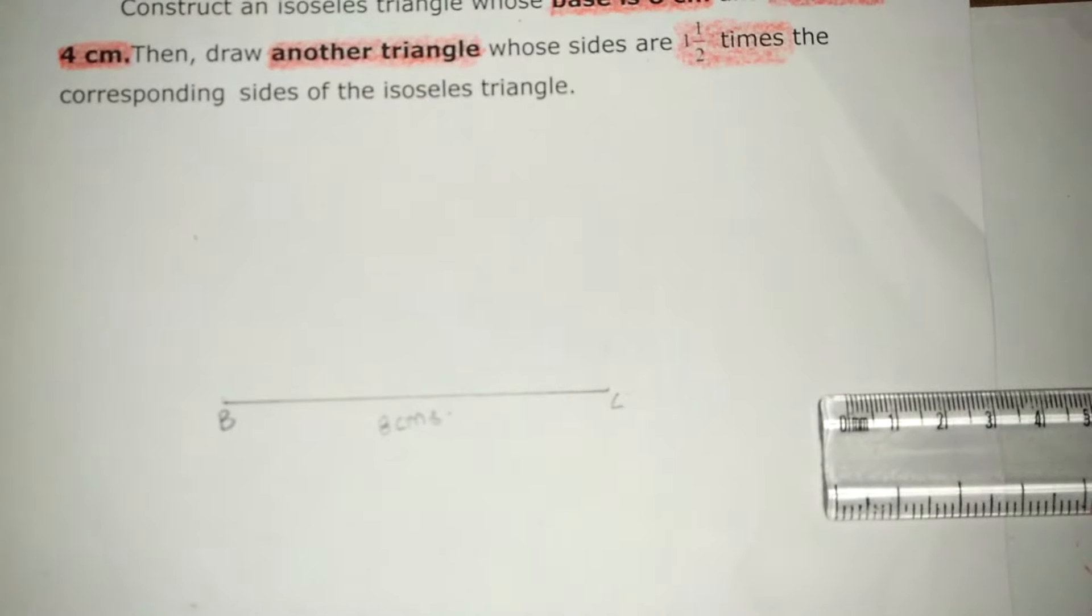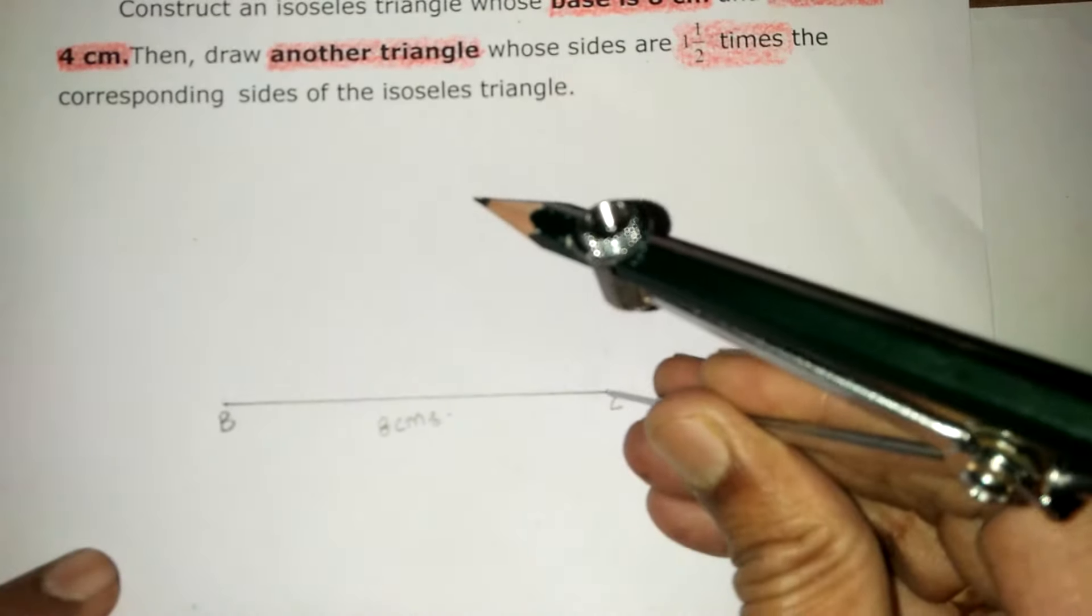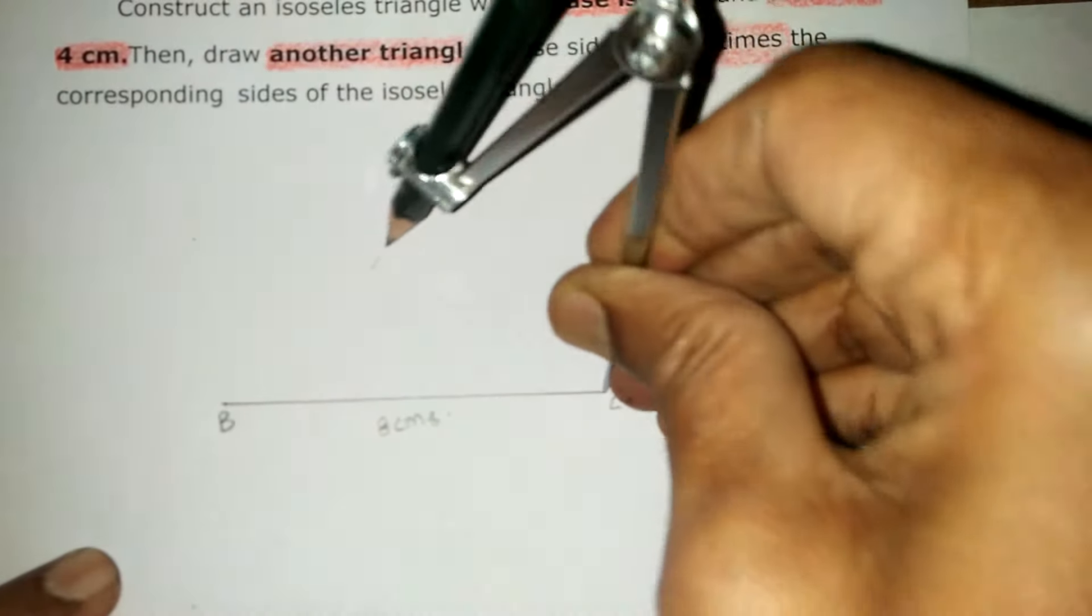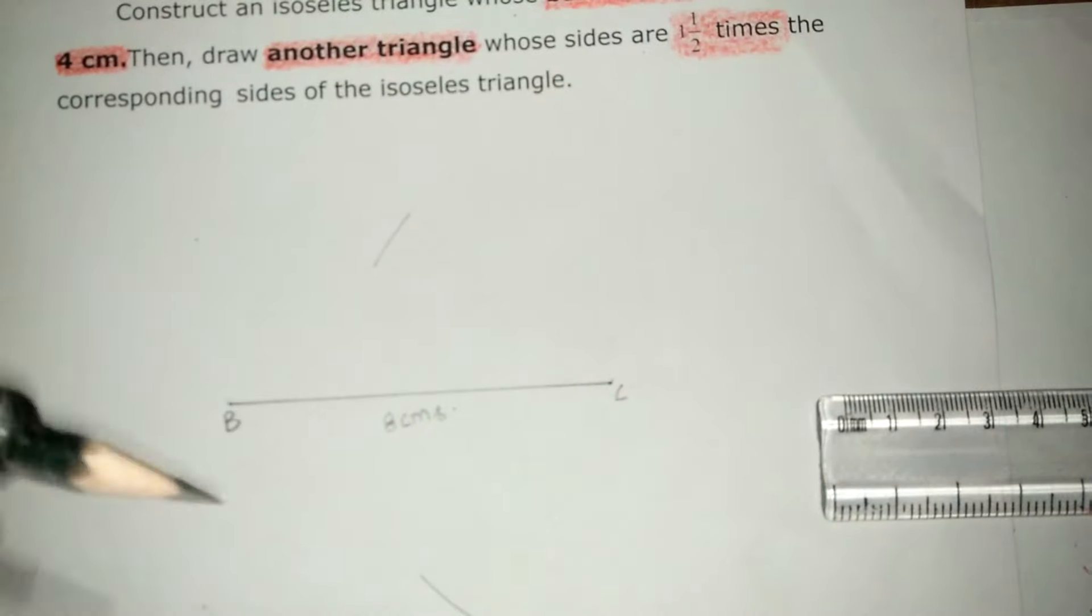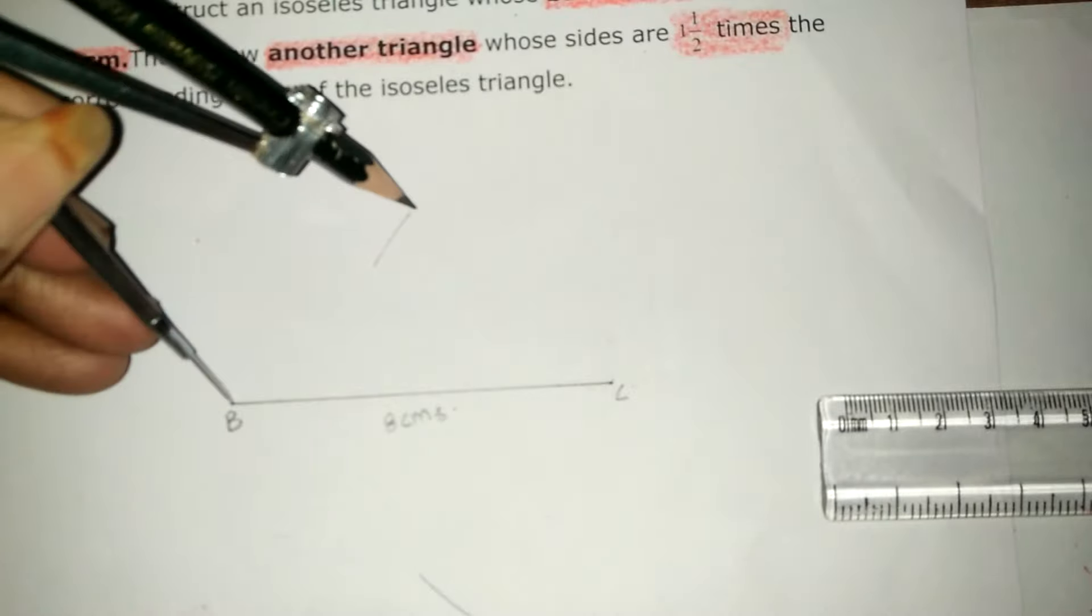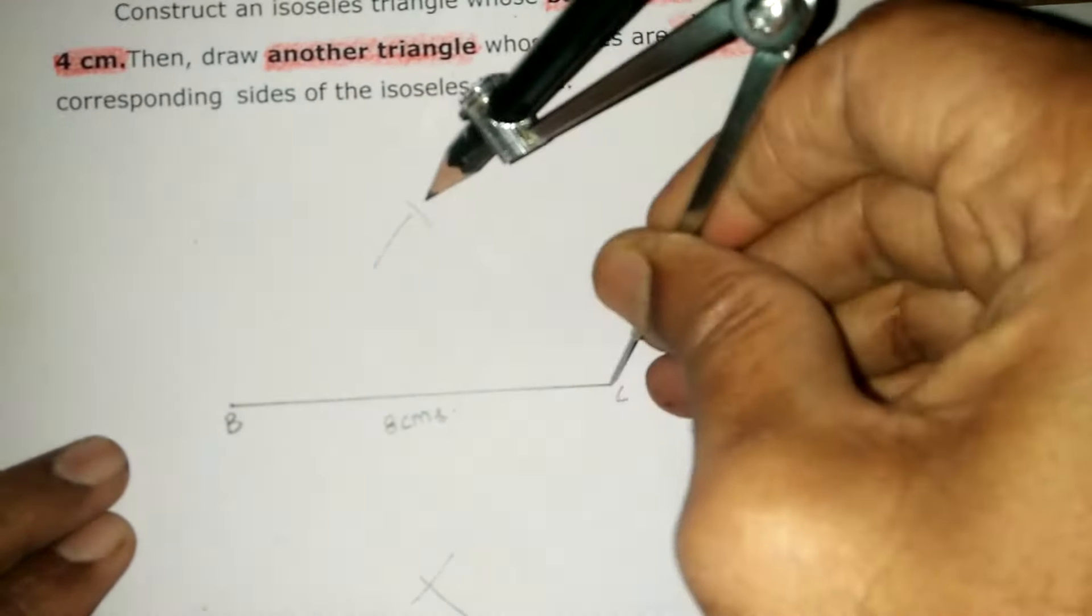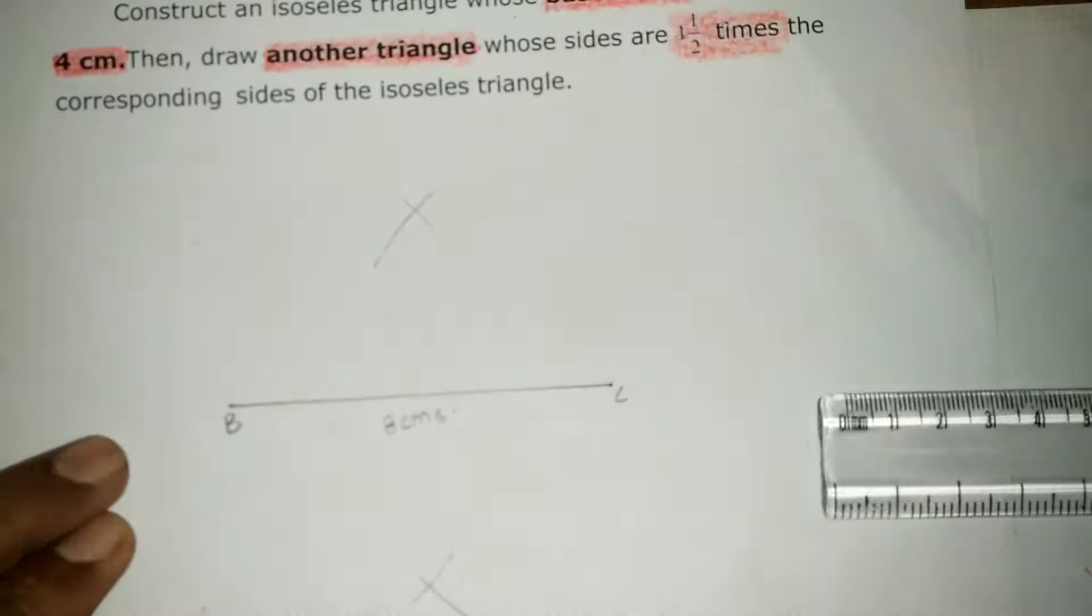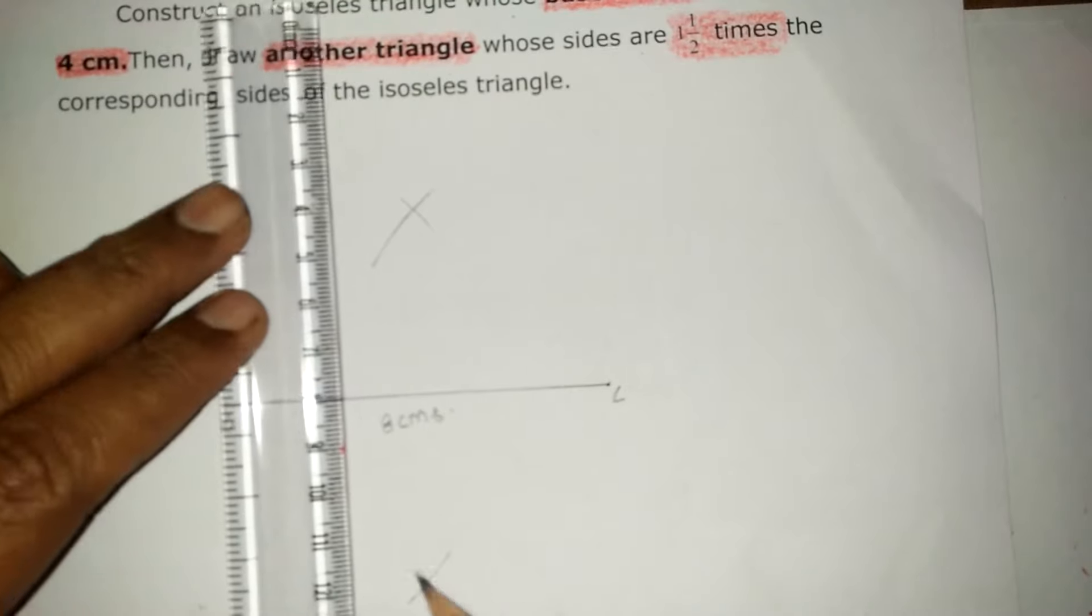Now draw a perpendicular bisector for this line segment. This is a perpendicular bisector, bisecting the line segment in two equal parts.